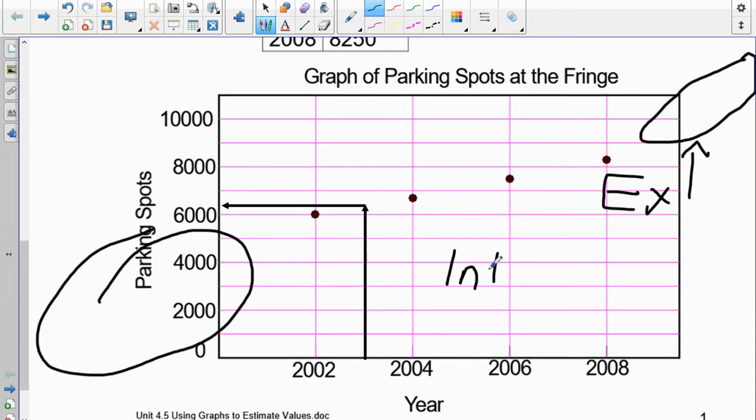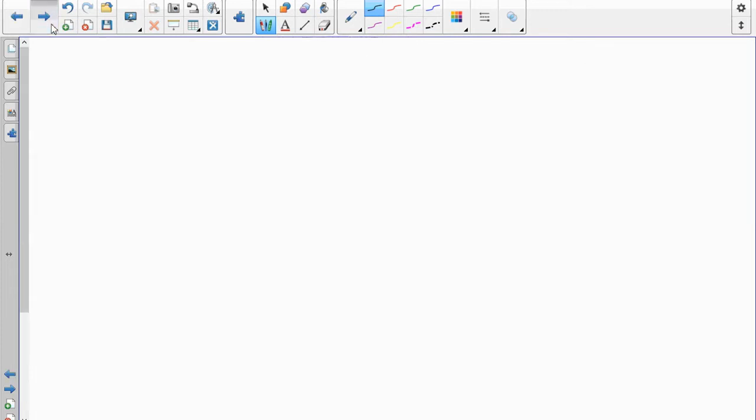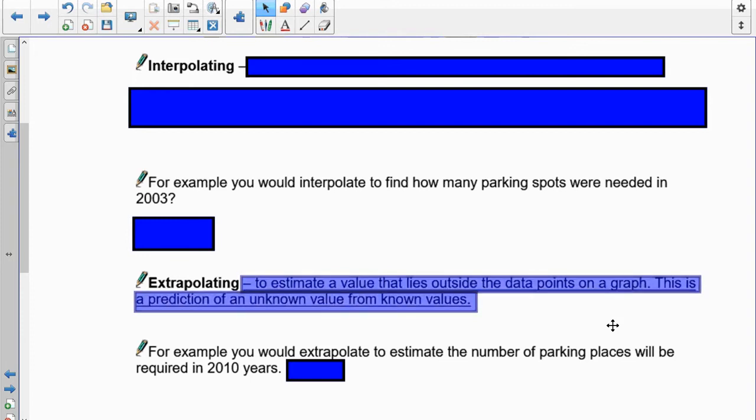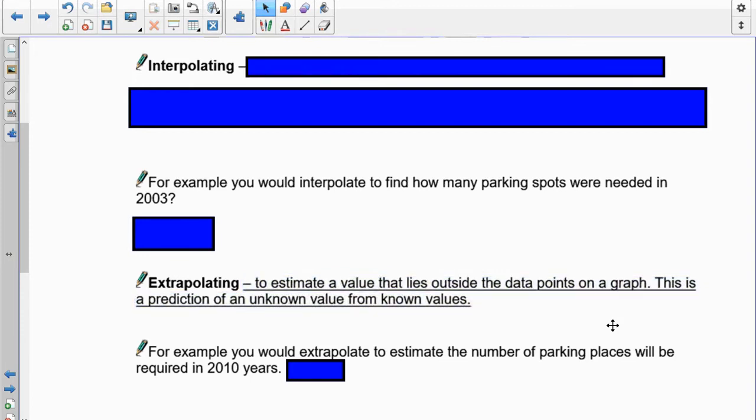Interpolation, interpolating is internal. So you can use those two things, the beginnings of them, the prefixes, to help you keep track of which one's which. So extrapolating is defined as estimating a value that lies outside the data points on a graph. This is a prediction of an unknown value from known values. So you take what you know and you extend it.